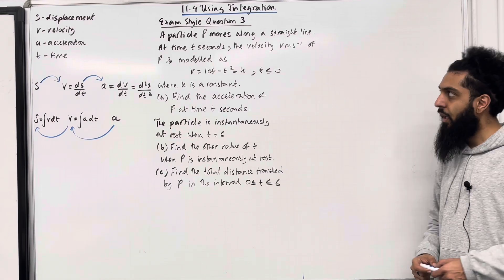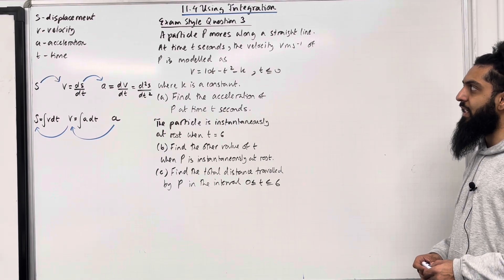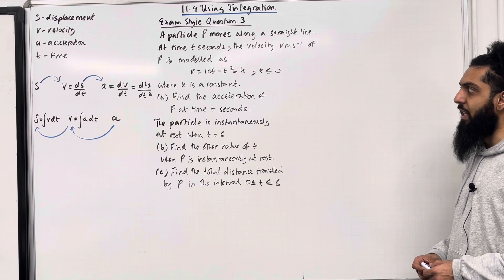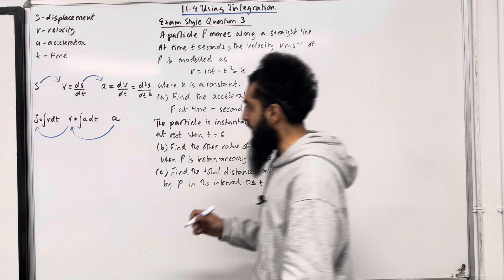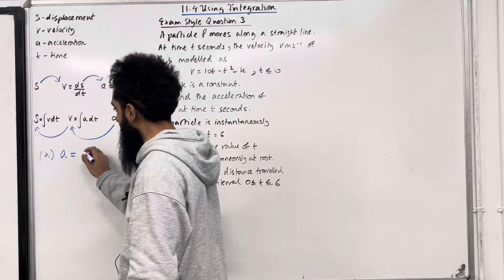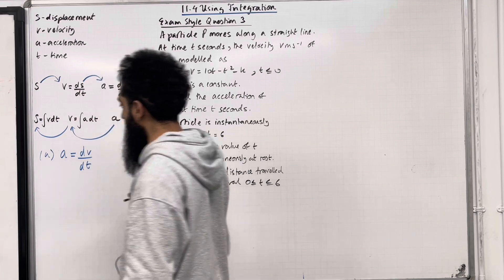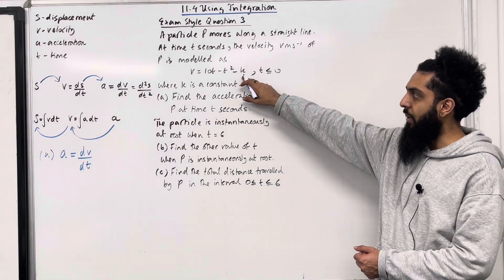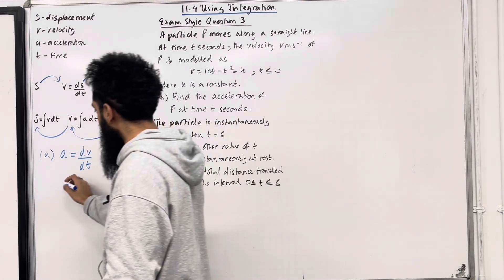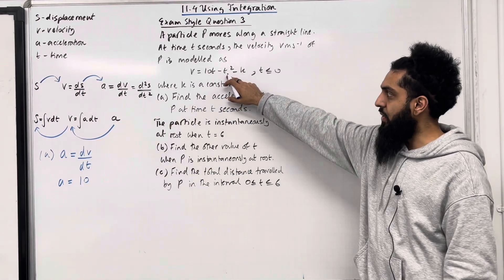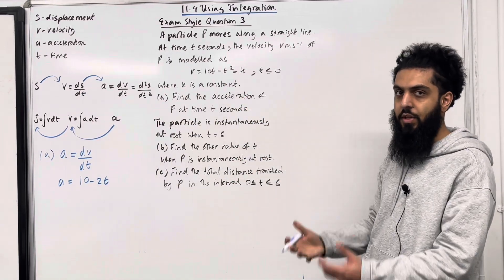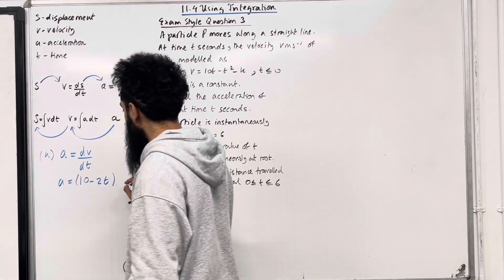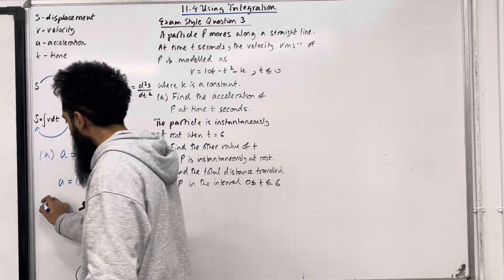Moving on to exam-style question 3. A particle P moves along a straight line. At time T seconds, the velocity V m/s of P is modelled as V = 10T − T² − K, for T ≥ 0, where K is a constant. Part A: find the acceleration of P at time T seconds. The acceleration is given by differentiating the velocity with respect to time, term by term: A = 10 − 2T metres per second squared.